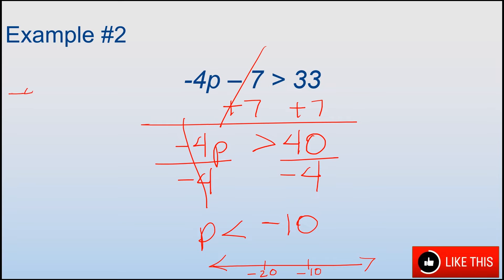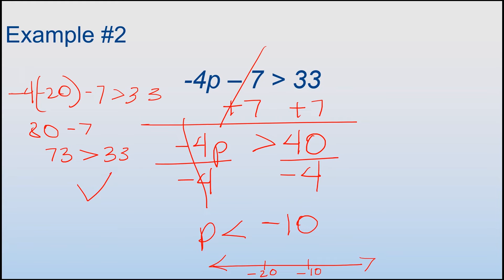Let's plug that in and see what happens. So I'm going to multiply here first. -4 times -20 would be a positive 80. Minus 7 gives us 73. 73 is greater than 33, so that was correct. Let's move on to example number 3.